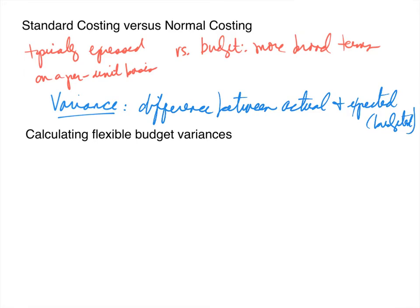We're going to talk about a tool we can use to calculate these variances, starting with materials and labor. In the next chapter we'll cover overhead variances. We're going to use the same diagram for both materials and labor — material variances in red and labor variances in green. Let's draw our chart.